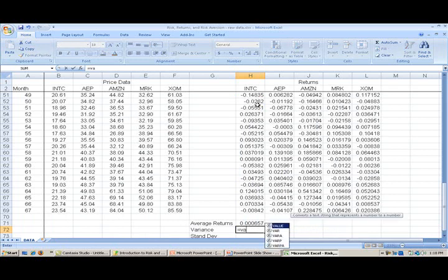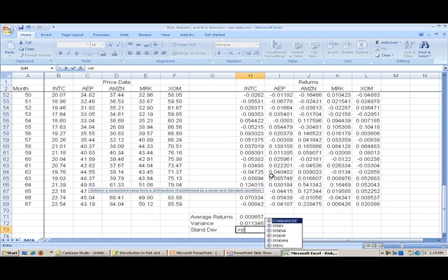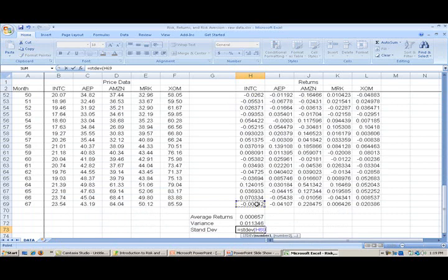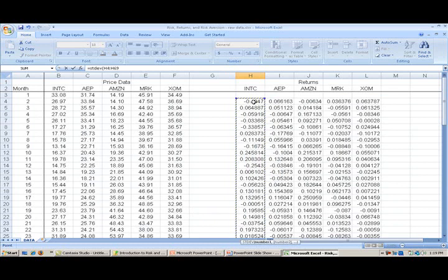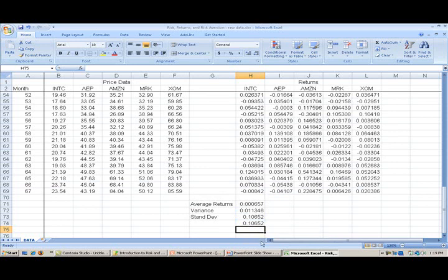The variance is going to be equal to the formula VAR, brackets, and then let's select Intel's returns again. The variance is 0.011346, and the standard deviation, we can use the formula STDEV, and again just select the returns for Intel. And we have now calculated average returns, variance, and standard deviation. Now you can check the standard deviation calculation. How? Well, we know that standard deviation is the square root of the variance, and we could test that. So equals, square root, which is SQRT, open brackets, and let's select the variance, close brackets. Hit enter, and we see that the number is exactly the same as the number that we calculated using standard dev.